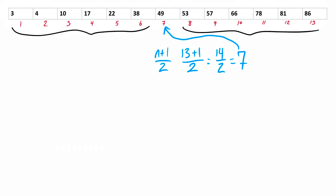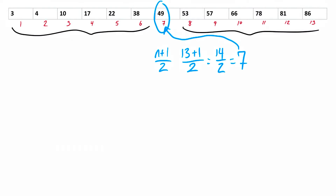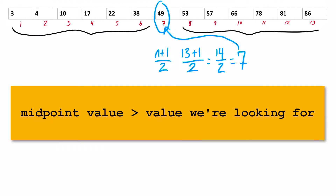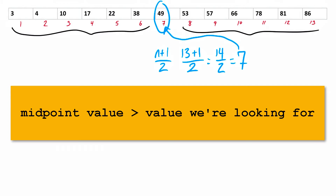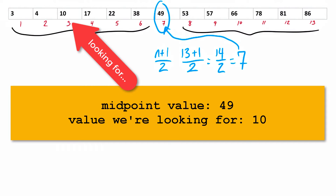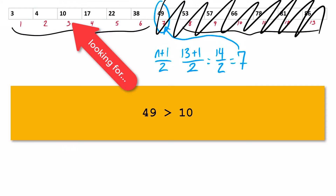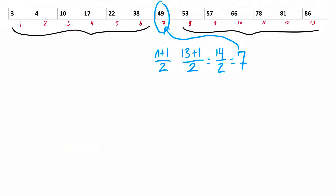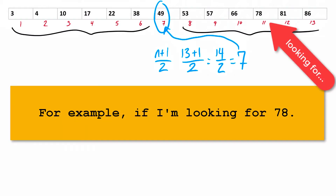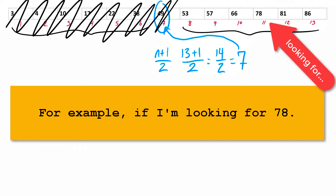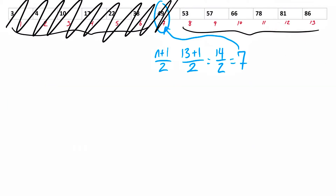If we're looking for a number and the value at position 7 is too big, then we could eliminate all the values equal to or greater than this midpoint value. For example, if we're looking for 10 and I look at 49 first, I know 49 is too big, so I can eliminate that half. If the midpoint is smaller than what I'm looking for, I can eliminate the other half. It's also possible that the value at the midpoint is exactly what we're looking for, so we should check that too.